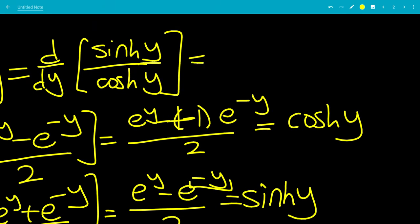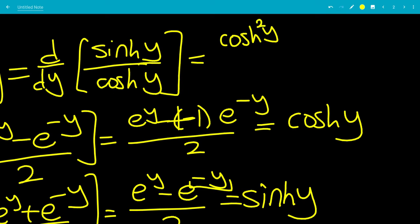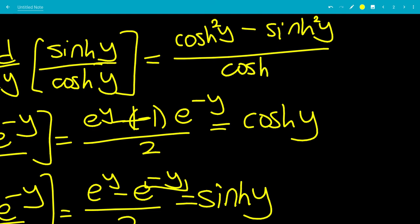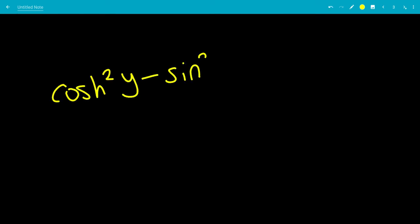We're going to use the quotient rule. The bottom function is cosh of y times the derivative of the top, which we found to be cosh of y — so we have cosh squared y — minus sinh of y times the derivative of cosh of y, which is sinh of y, so we can square that, all over cosh squared of y. This gives us cosh squared y minus sinh squared y over cosh squared y.